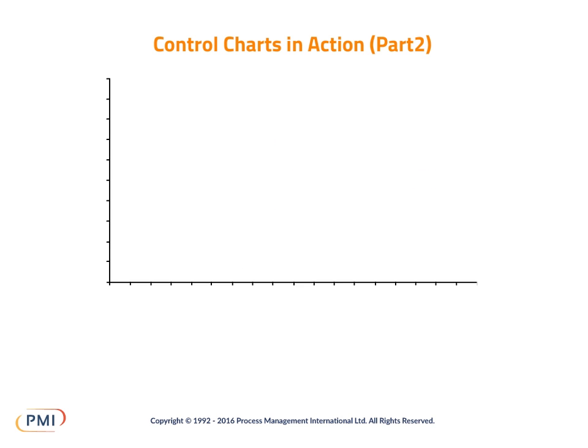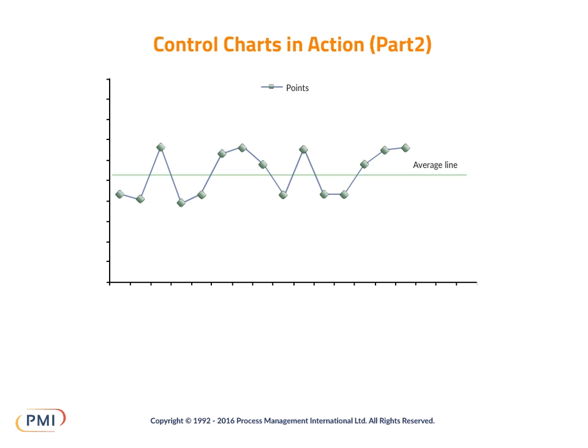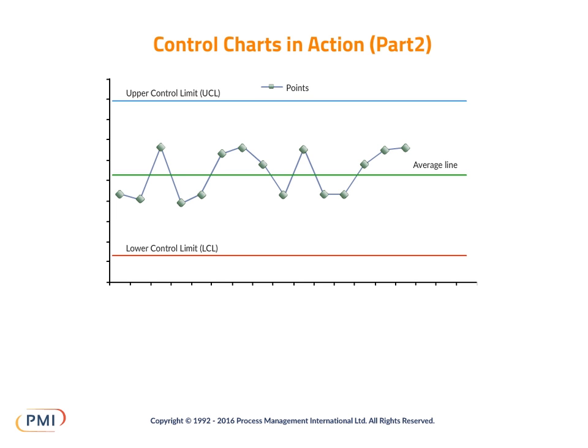Before you create a control chart, it is recommended that you collect at least 20 data points. Next, you draw the axes and plot the data points. Then calculate the average value and draw this on the chart. Finally, calculate the control limits and add them to the chart. You can now check whether any assignable cause variation is present, and if so, whether Rule A or Rule B applies.